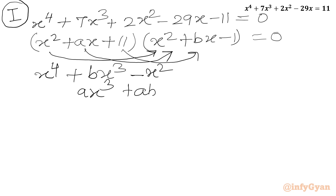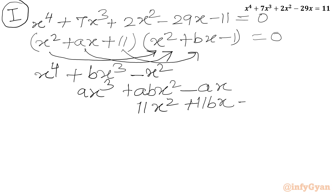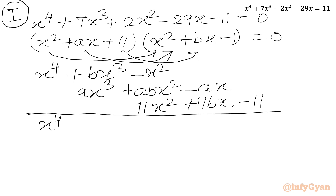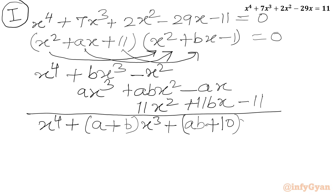We write abx², then ax times -1 gives -ax, then 11 times bx gives 11bx, then 11 times -1 gives -11. Collecting like terms: x⁴, (a+b)x³, (ab + 10)x², (11b - a)x, and constant -11, all equal to 0.